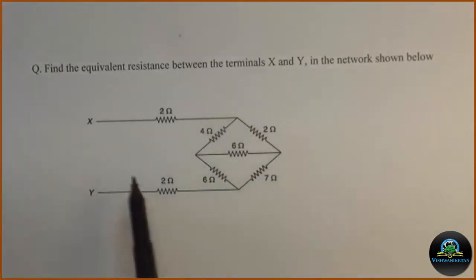So this is my network, these are points X and Y. I have to calculate equivalent resistance between X and Y by applying star delta conversion technique.